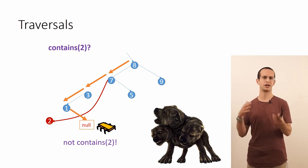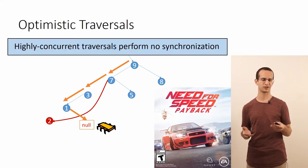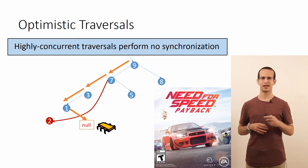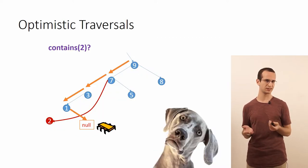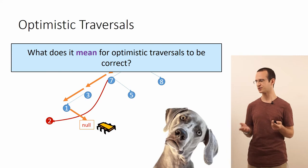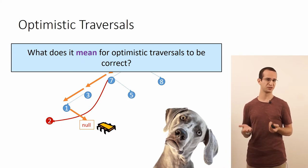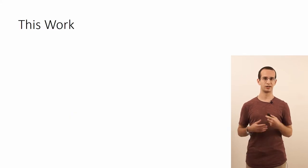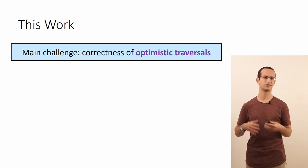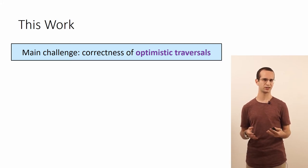The problem is that the more synchronization you have, the less concurrency you have. So optimistic data structures employ traversals that don't perform, or perform very little, synchronization with the writers. And this approach has been used starting from the lazy list all the way to many, many self-balancing binary trees. So this is great for performance, but it means that we are left to deal with all these strange behaviors somehow. And this raises two questions: one, what does it mean for such optimistic traversals to be correct at all? And two, how can we tame all this complexity to actually prove that the traversals the algorithm performs are indeed correct?